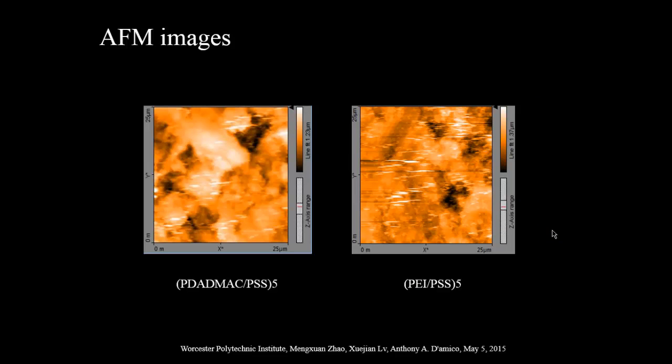These are AFM images of two polyelectrolyte multilayers on the substrate. There is no big difference between these two images. This is because the thickness of the multilayer coating is around only 10 nanometers, so the surface morphology is mainly dependent on the substrate.